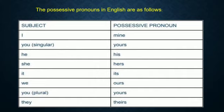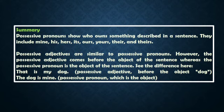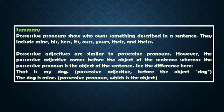A brief recap: possessive pronouns show who owns something described in a sentence. They include mine, his, hers, its, ours, yours, and theirs. Possessive adjectives and possessive pronouns look similar; however, a possessive adjective comes before the object of the sentence, whereas a possessive pronoun is the object of the sentence. For example: 'That is my dog' — the possessive adjective 'my' comes before the noun 'dog.' 'The dog is mine' — here, the possessive pronoun 'mine' itself is the object.